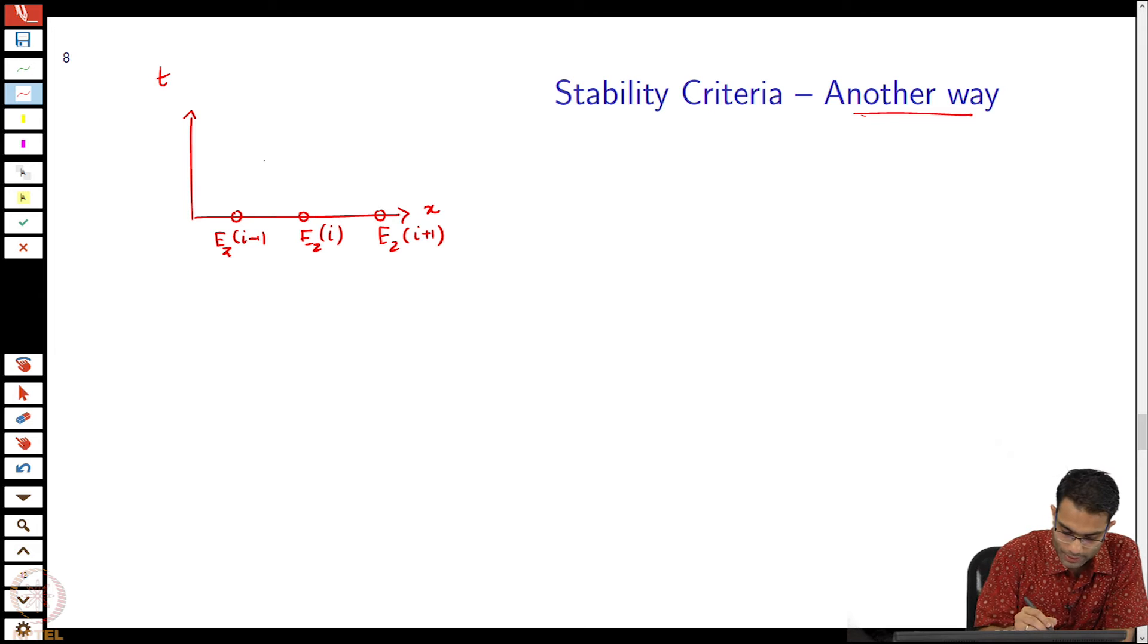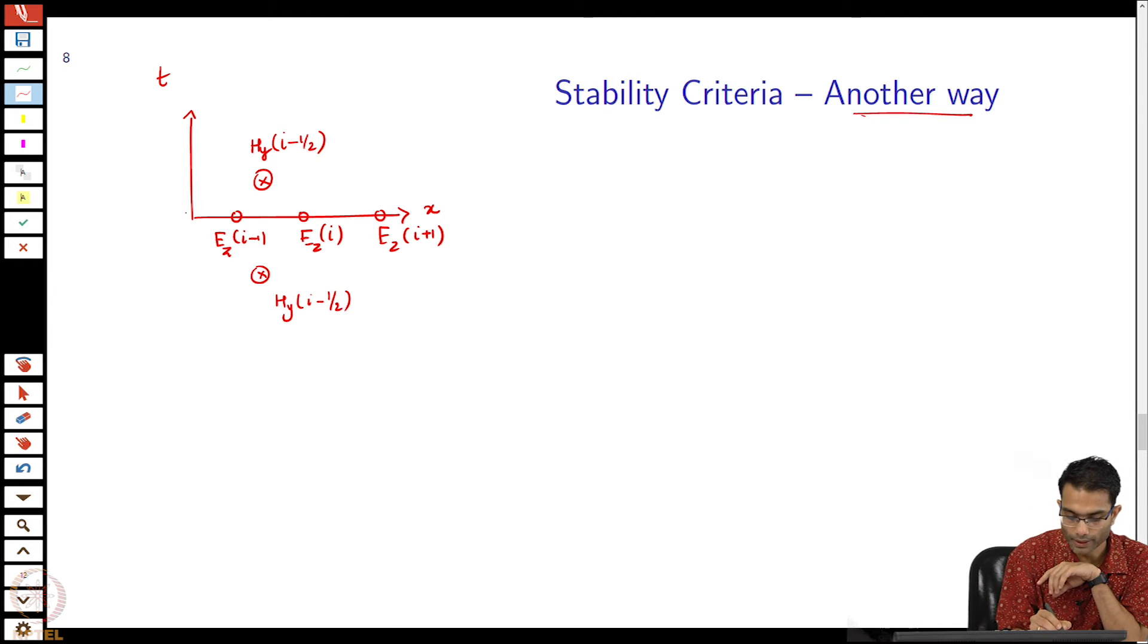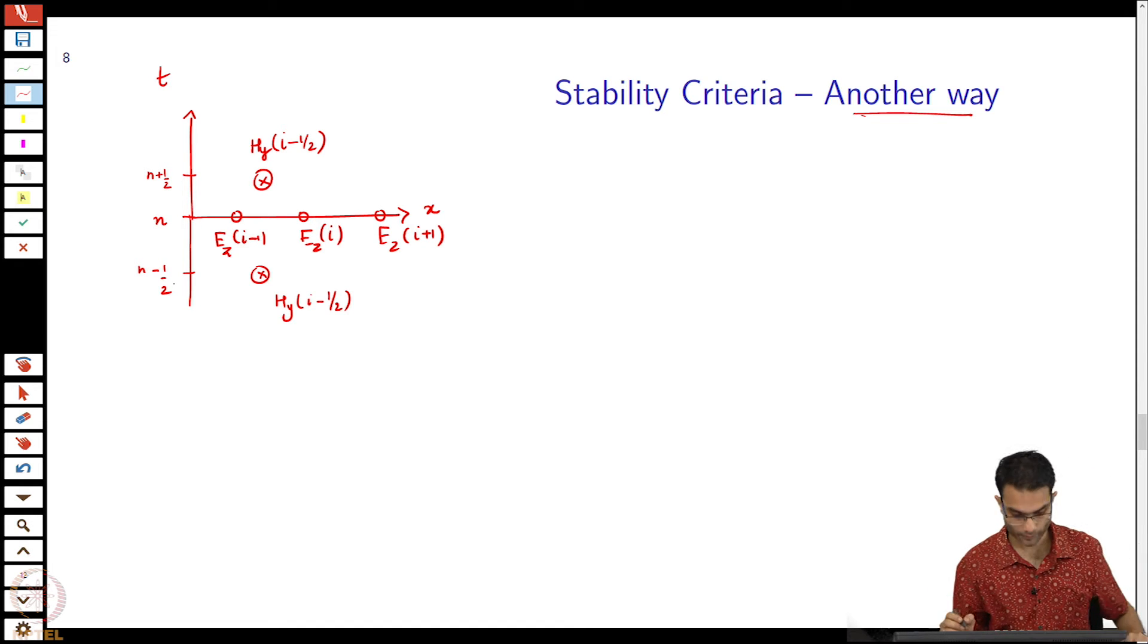Remember in time also the variables are staggered by half a grid and in space also. This is going to be my H, let us call it some Hy. Hy at i minus half and correspondingly there will be a Hy of i minus half. In terms of time instance this is n, this is n plus half and this is n minus half. I have taken just Ez and Hy, the TE polarization, I am just looking at one of these equations.